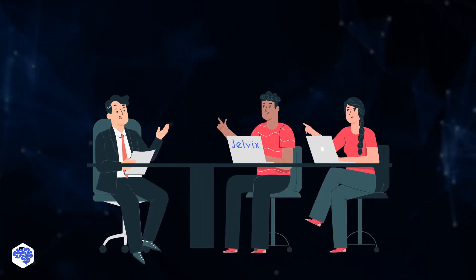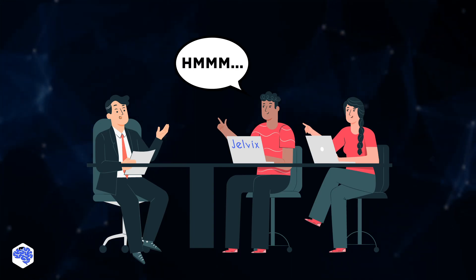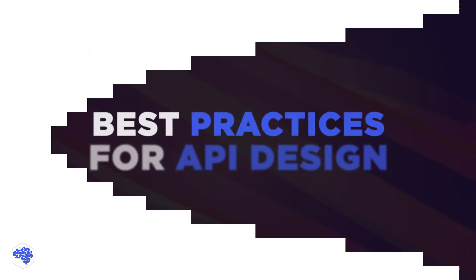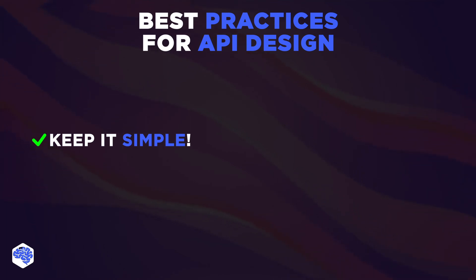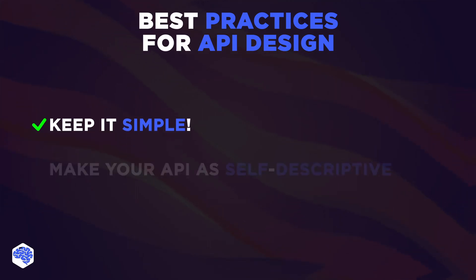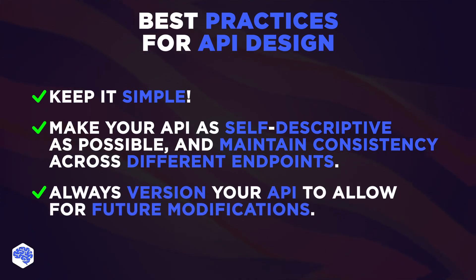As we wrapped up our benchmark tests and prepared to send the comparison summary to our client, we found ourselves diving into a discussion about best practices for API design. Our seasoned developers had a few nuggets of wisdom: keep it simple — an easy-to-understand API is a joy to work with. Make your API as self-descriptive as possible and maintain consistency across endpoints. Always version your API to allow for future modifications without breaking existing applications.